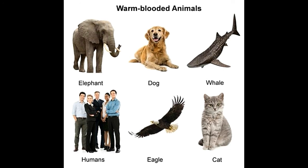However, there are exceptions to this classification. Bats, for example, can alter their metabolic rates and exhibit the ability to switch between cold-bloodedness and warm-bloodedness in response to their level of activity. Despite being cold-blooded, honeybees can increase the temperature of the hive by flapping their wings to keep the hive warmer in winters.